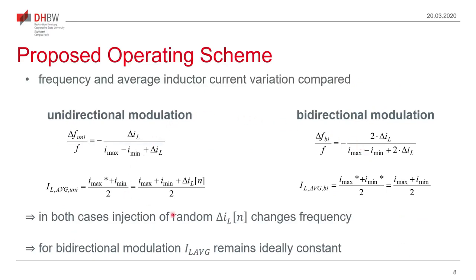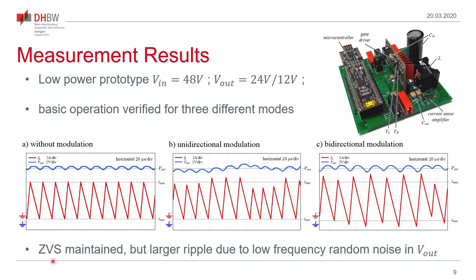Calculating the average inductor current for both unidirectional and bidirectional operation: in unidirectional operation, the original thresholds plus the random sequence define the average current, so the average current changes almost proportionally to the random modulated signal. In bidirectional modulation, the average value of the original and modulated signals are the same. In both cases there is a change in switching frequency, but bidirectional modulation ideally leaves the average inductor current unchanged, producing no low-frequency oscillation in the output voltage.